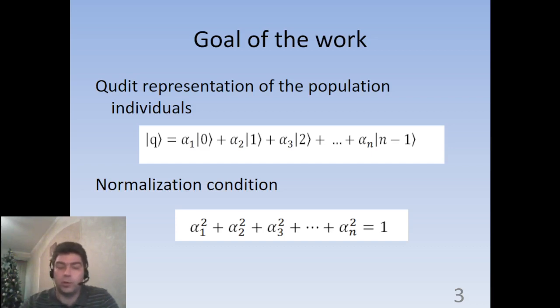Q-dits is a quantum system which may be in any of n basic states, from 0, 1, and so forth, up to n minus 1, or it can be in any superposition of those, with a normalization constraint which is shown in these formulas.